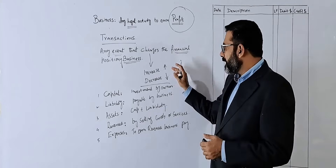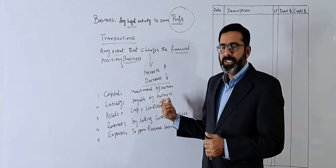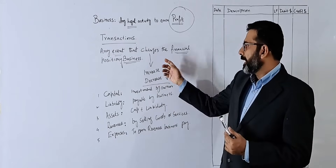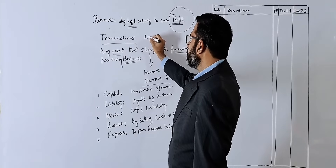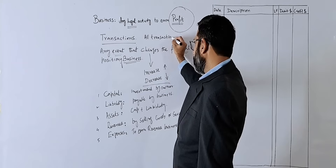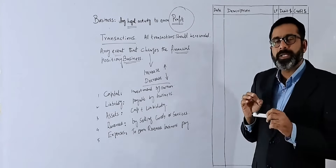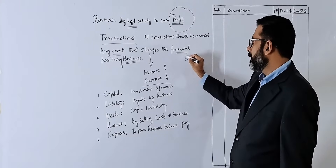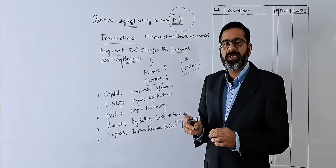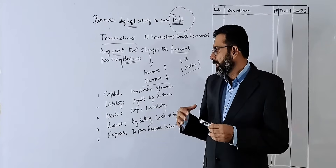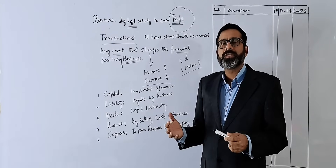If there is any change — either an increase or decrease — in capital, liability, asset, revenue, or expenses, that would be called a transaction. Any transaction in the business should be recorded. We have the rule that all transactions should be recorded in the journal, and we will discuss the format of the general journal and the rules for recording.